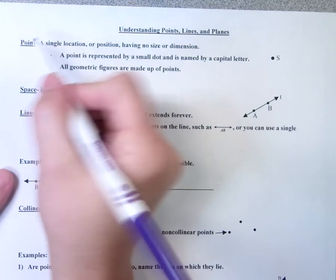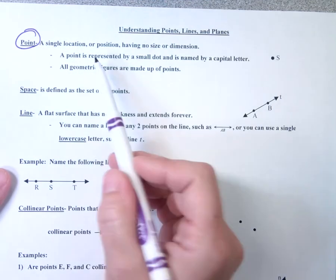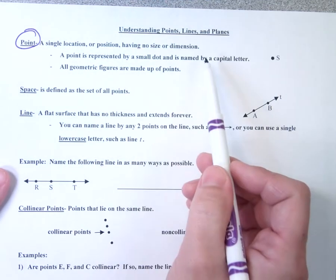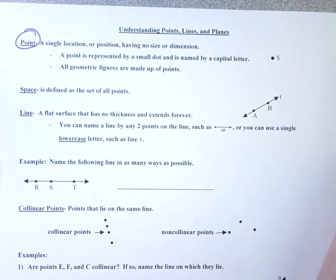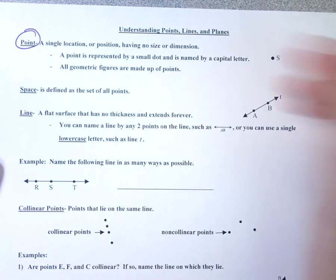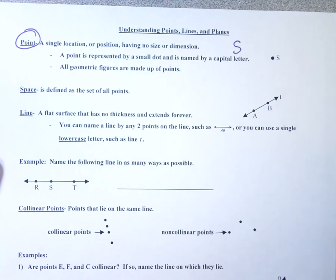Our first word is point. This is a single location or position having no size or dimension. Normally, you see a small dot and a capital letter beside it. When you see this, I just call this point S. This right here is a point — just a specific point in space — and I call it point S.